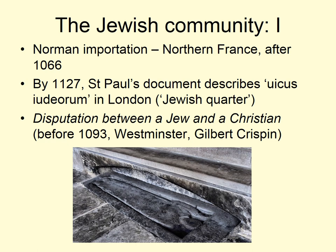There are religious texts reflecting the interaction between the Jewish faith and the Christian faith, both on a theoretical basis used for teaching and as practical discourse on the nature of Judaism in the Middle Ages. For example, the disputation between a Jew and a Christian, written sometime before 1093 by Gilbert Crispin, is a theoretical dialogue between a Jew and a Christian about different aspects of faith. The idea of the Jewish community living alongside the Christian community was part of the psyche of society in Britain in the Middle Ages.